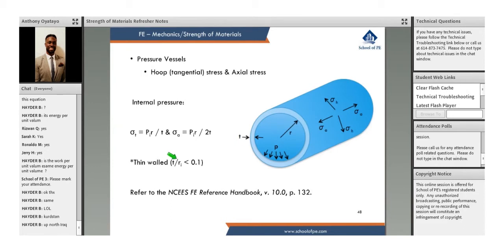The important thing when we're looking at this is you can see there's a designation here between r i and here is just r. So when we're looking at these problems, our r is going to be the average, basically r i and r o divided by two.